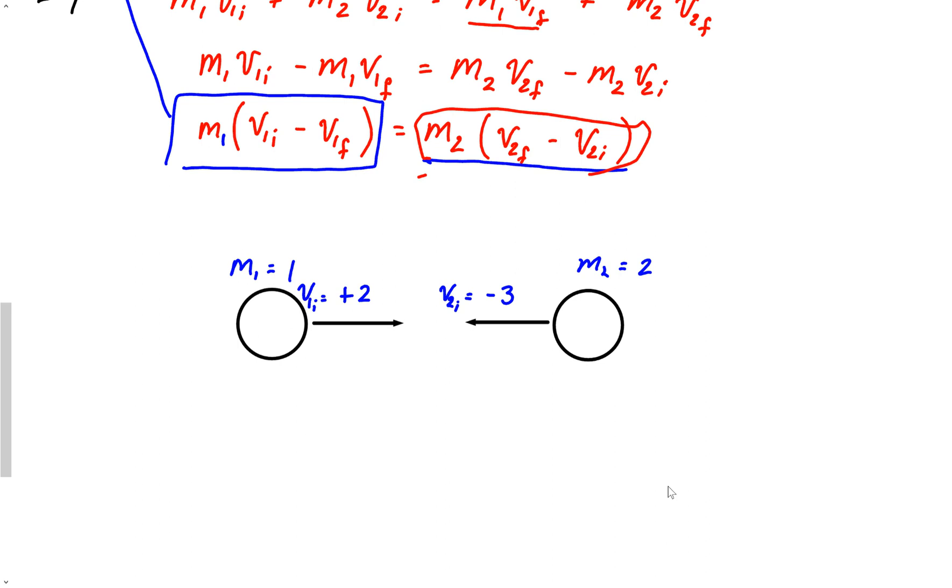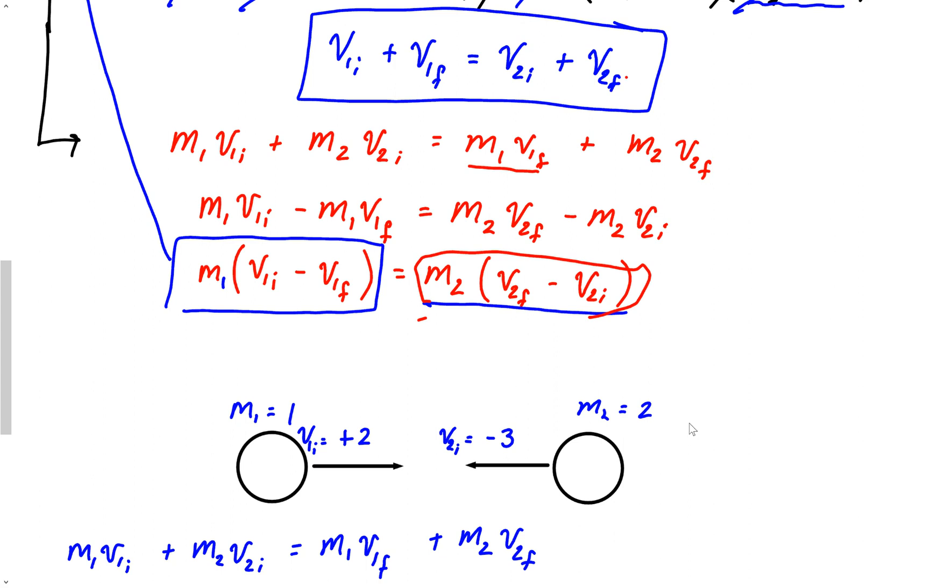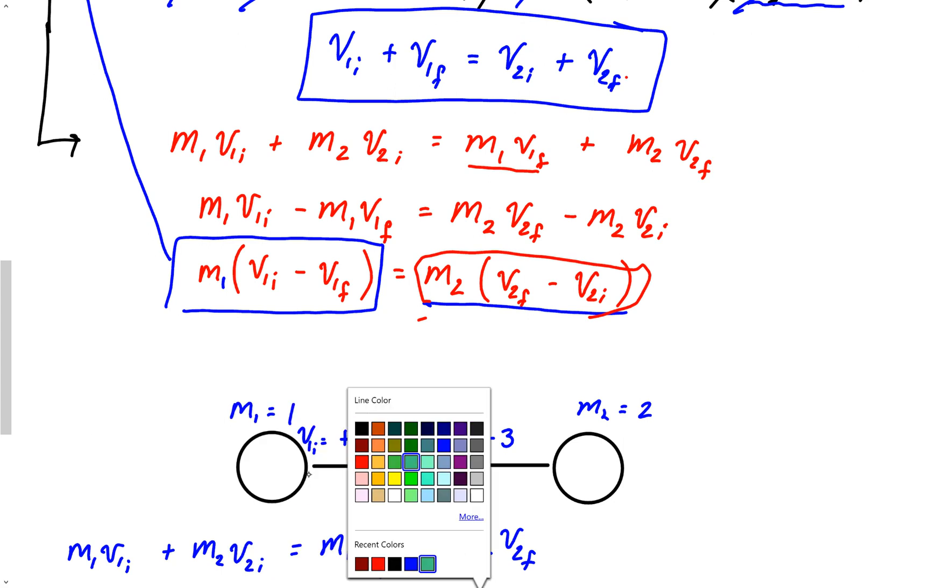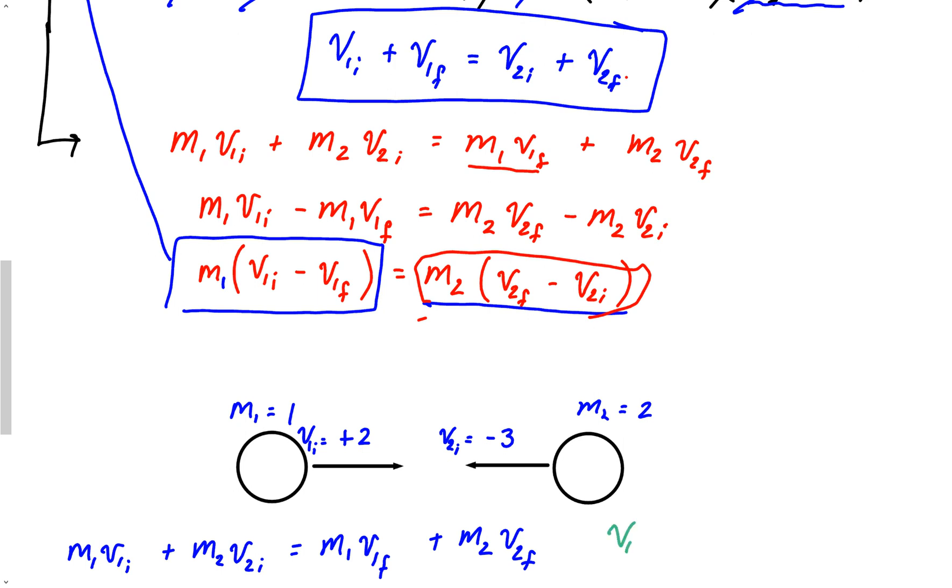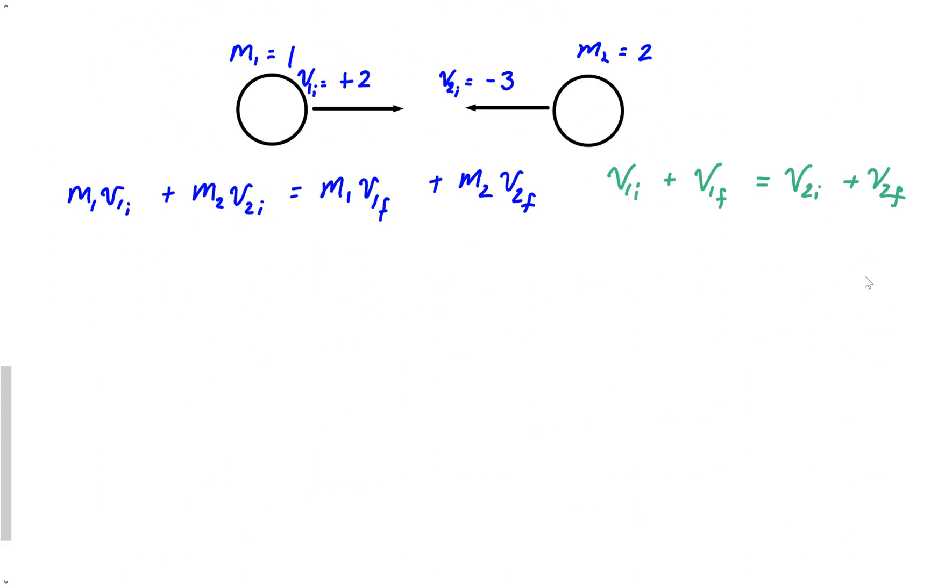If it was the same masses, it makes these problems so easy. But now to do this problem, you need your conservation of momentum equation, M1 V1 initial plus M2 V2 initial equals M1 V1 final plus M2 V2 final. And I'll need my special new equation as well. V1 initial plus V1 final equals V2 initial plus V2 final. Like I said, this is easier to memorize than that other version of the equation. And that's why I do it this way.